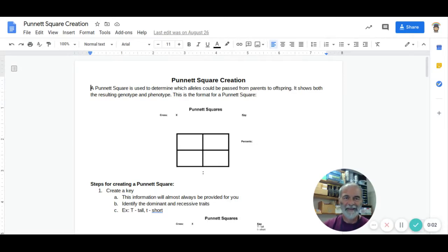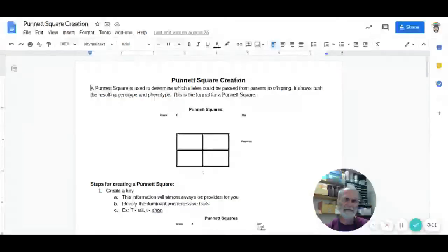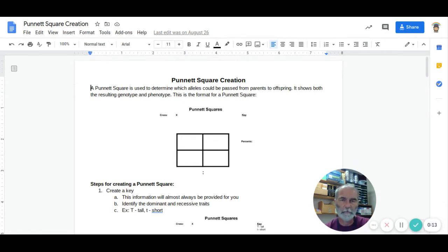Punnett squares, what fun! Punnett squares are used to determine which alleles could be passed down from parents to offspring. It shows both the resulting genotype and phenotype.